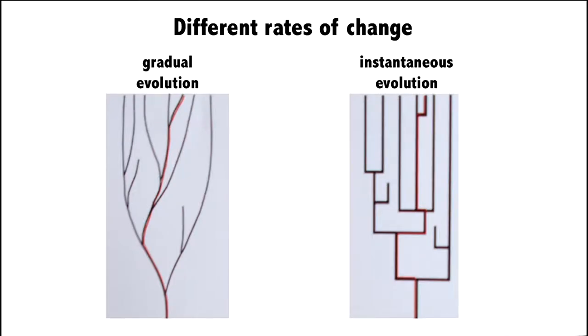Now, there are different rates of change in a phylogenetic tree. In the tree on the left, we have gradual evolution in which the red line is almost vertical. It deviates only a little bit, but on the tree on the right, it represents almost instantaneous evolution in which the red line goes off to the left and goes off to the right. There are different rates of evolution, and that can be indicated on these trees.